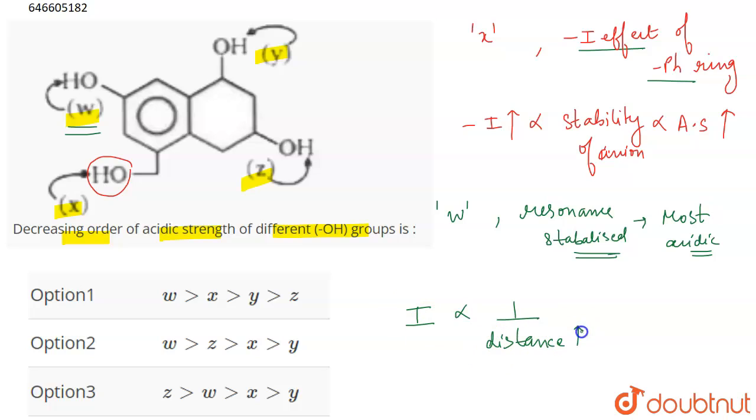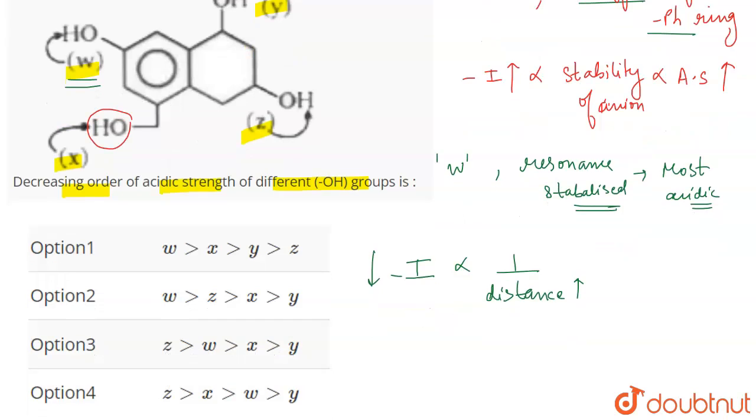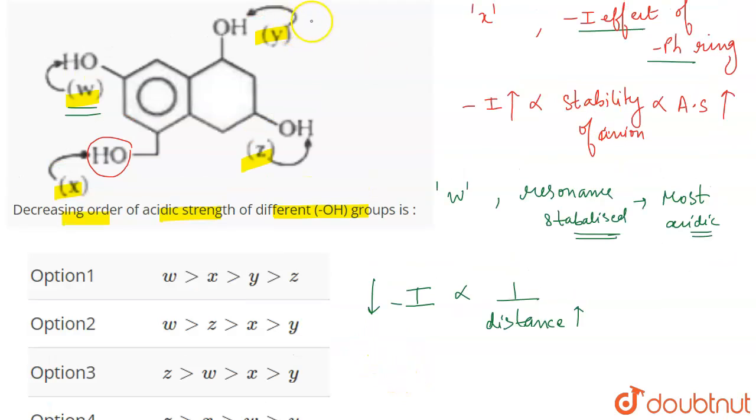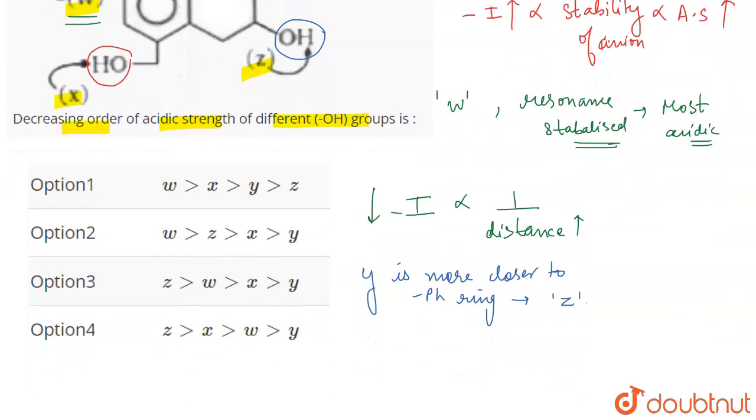More is the distance between the OH group and the minus I group, less will be its effect. So if we talk about this, then what do we understand? Now, if you talk about Y, Y is more closer to the phenyl group as compared to Z. Y is more closer to the phenyl ring in comparison to Z.